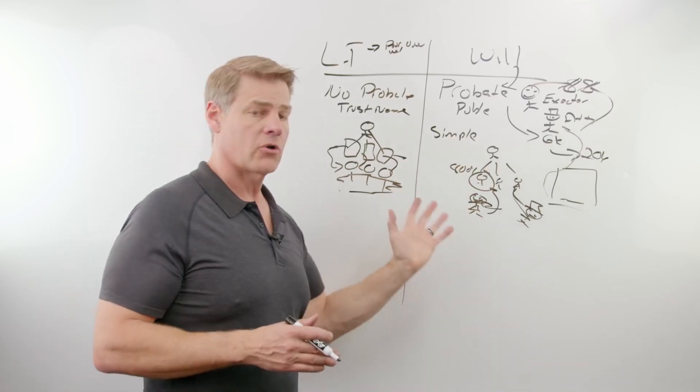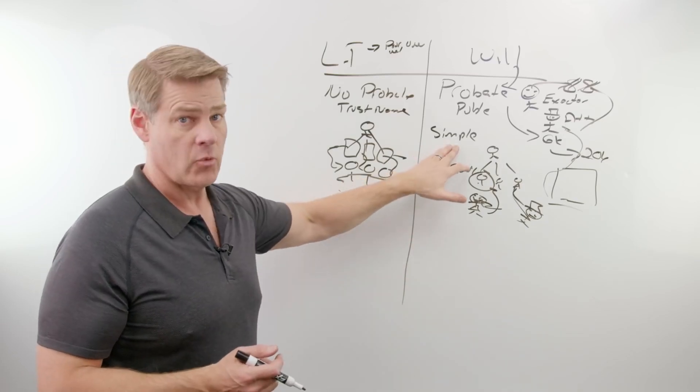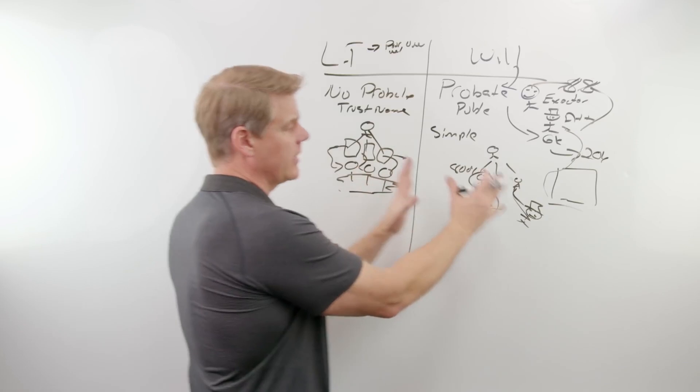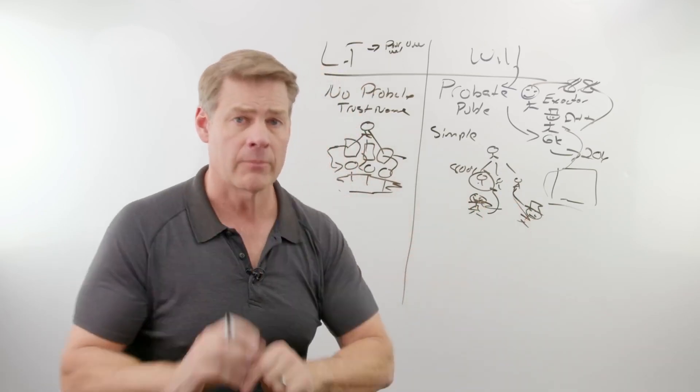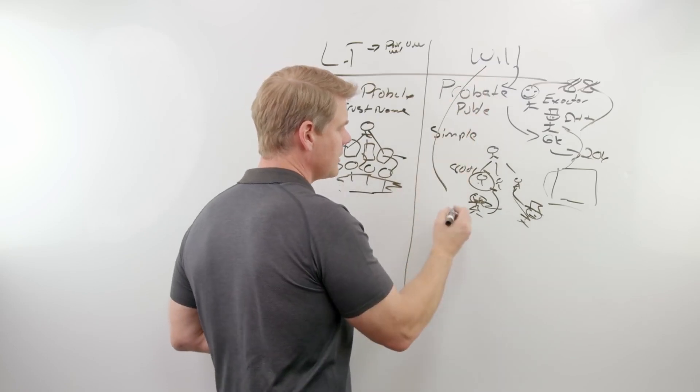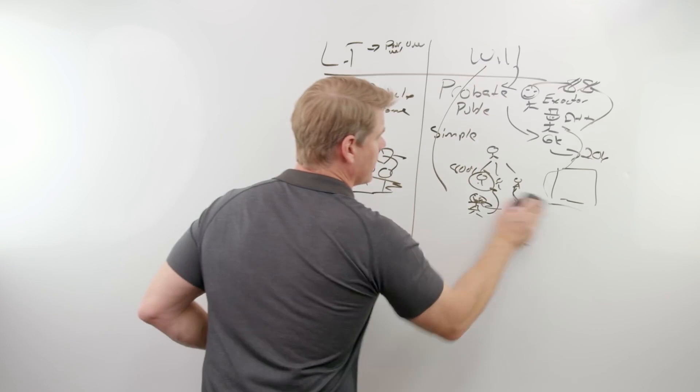Whereas over here, you can give the creditors access to those potential assets if you make it a simple will. Now, many attorneys will tell you, hey, whatever you do in a living trust, we can do in a will. And they're 100% accurate when they tell you that. Because you can actually set up a will that does something similar to what I just showed you here.